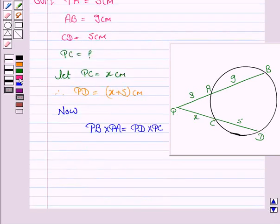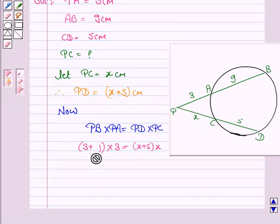Let us now substitute all these values. PB is 3 plus 9 cm into PA which is 3 cm is equal to PD which is x plus 5 cm into PC which is x. It is not 19, it is 9.